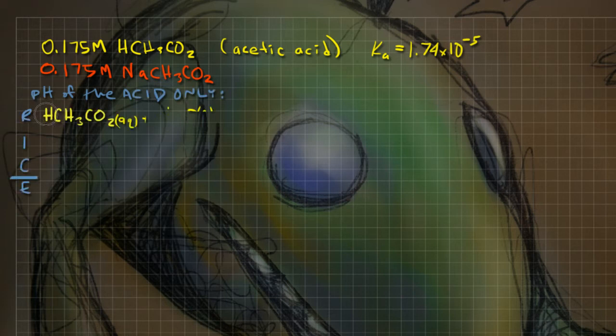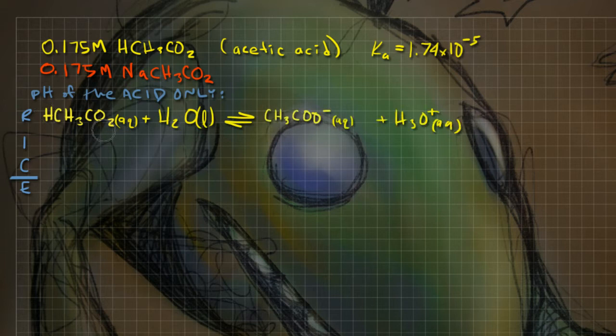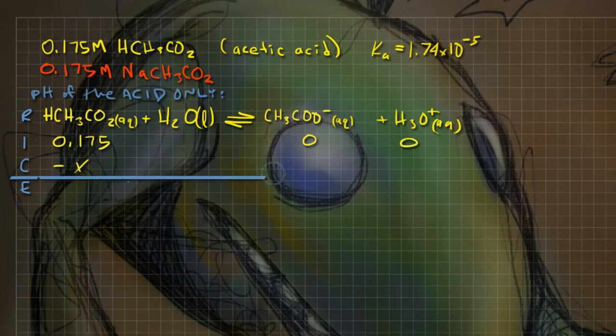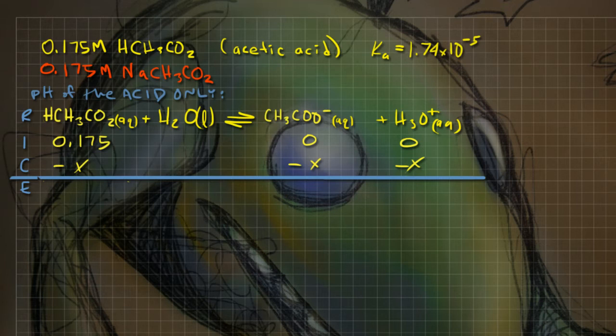We're going to mix that together and find out what the pH is, but first I want to see what would the pH be if it's just the acetic acid by itself mixed into water. Let's try it out. If I have the acid only added to water, I'm going to run a RICE table. Here's my reaction: acetic acid plus water yields the conjugate base and H3O plus.